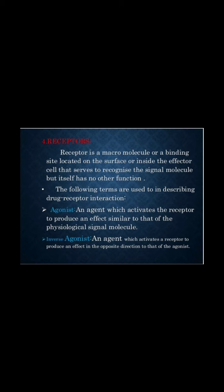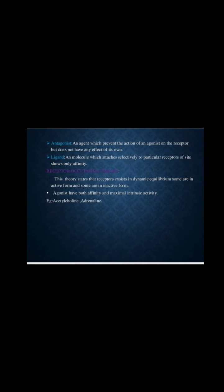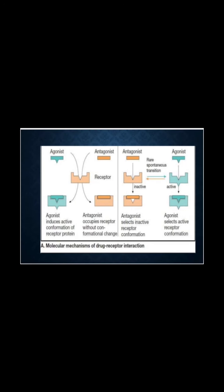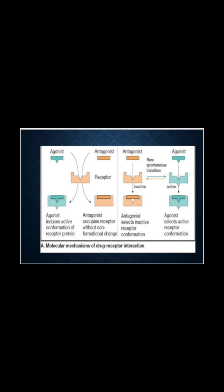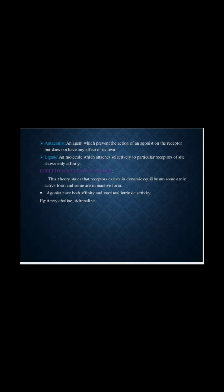The following terms are used in describing drug-receptor interaction. First is agonist — an agent which activates the receptor to produce an effect similar to that of the physiological signaling molecule. Next is antagonist — an agent which prevents the action of an agonist on the receptor but does not have any effect on its own.